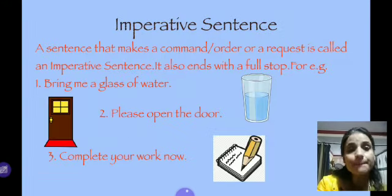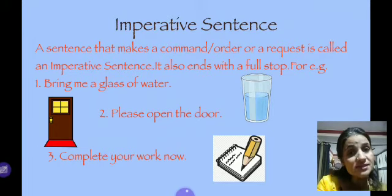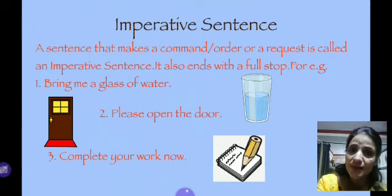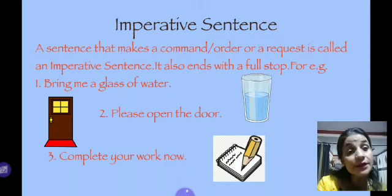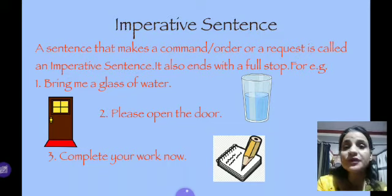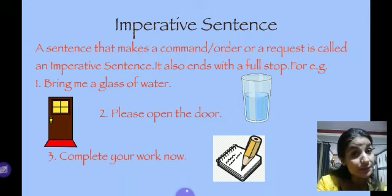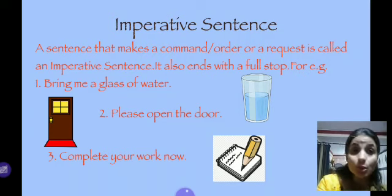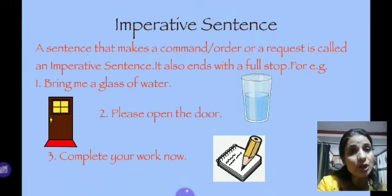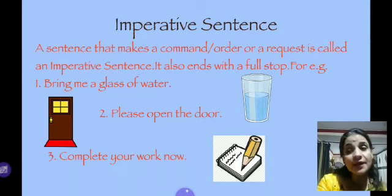Next category is the imperative sentence. A sentence that makes an order or command, or a request or wish — that kind of sentence is called an imperative sentence. At the end of an imperative sentence, we use a full stop. You might have heard your teacher or your mother use this kind of sentence many times. These kinds of orders or requests are examples of imperative sentences. The word 'you' is hidden in these sentences, because these commands or requests are directed at you.